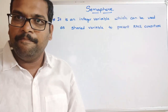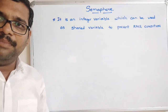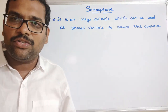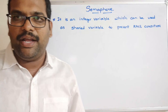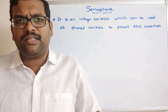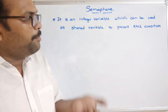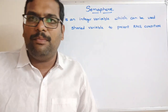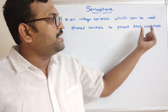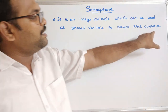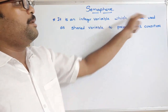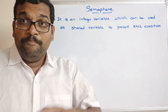Race condition means if two processes are executing concurrently, there might be a chance of getting inconsistency in data. Both processes will have different results and each will treat its own result as the correct one — that is what we call a race condition. In order to prevent that race condition, we use a semaphore as an integer variable which can be used as a shared variable.